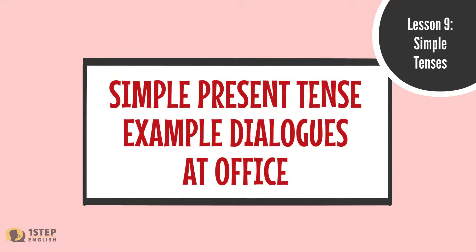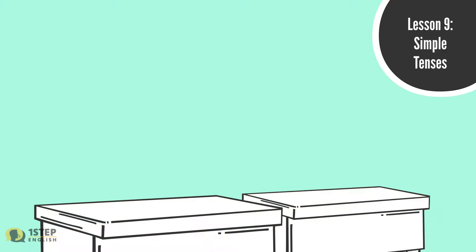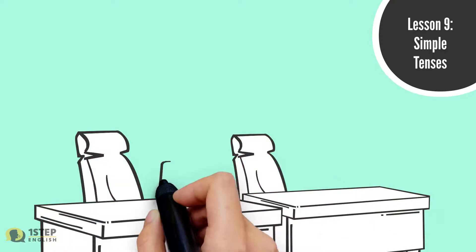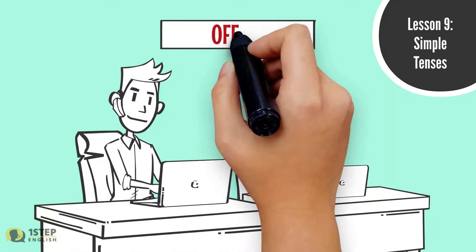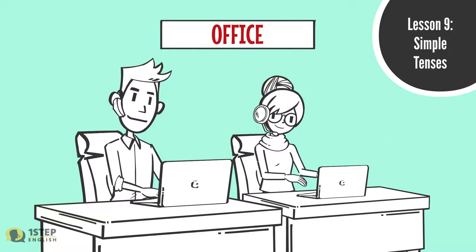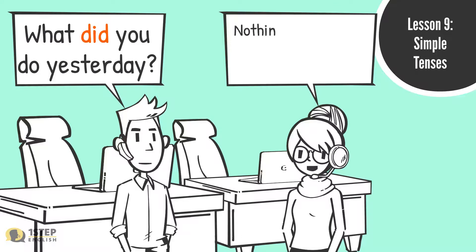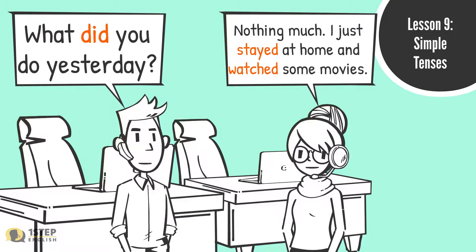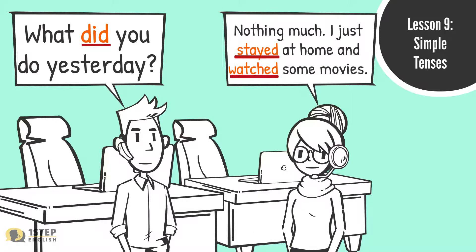Simple past tense example dialogue at the office: 'What did you do yesterday?' 'Nothing much. I just stayed at home and watched some movies.' The word 'did' is simple past tense — it is an irregular verb, the past tense of 'do.' Both 'stayed' and 'watched' are simple past tense; we add -ed to both of them.